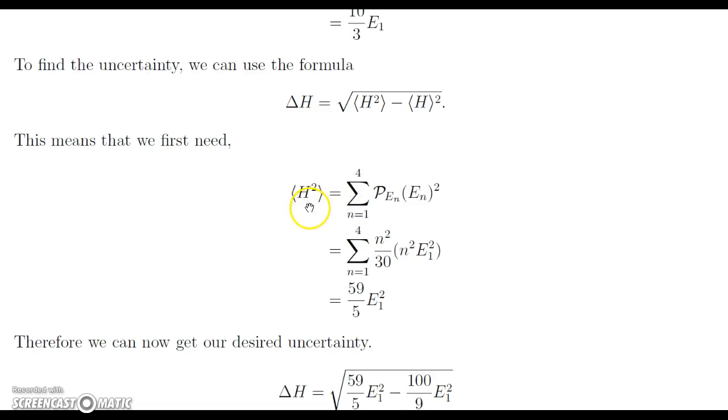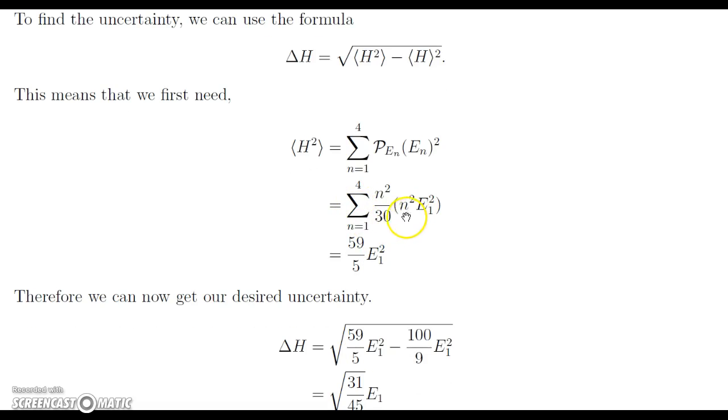So here we can calculate this, and we just get the sum again, but instead we have that the energy value, E sub n, is now squared in our sum. So when we plug in the new values, we still have n squared over 30, but now we have an n squared times the E1 squared for our En squared. And when we take the sum, we get that the expectation value here of H squared is equal to 59 fifths times E1 squared.